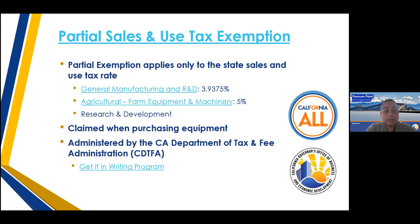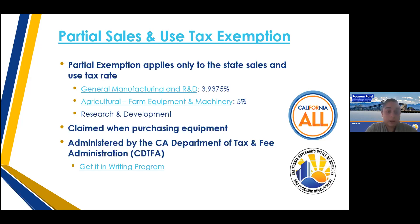The Department of Tax and Fee Administration has a really handy 'Get It In Writing' program. You can write to the department listing the equipment purchases you plan to make, and they'll respond in writing confirming whether those purchases qualify. It's a very helpful program — companies often want confirmation in writing that they'll be able to utilize this exemption for different purchases they make.